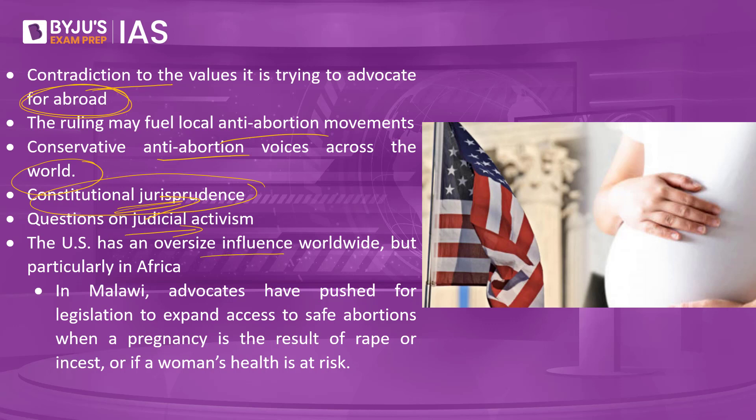The US has an oversized influence worldwide, particularly in Africa. As the saying goes, if the United States sneezes, the whole world catches a cold. In Malawi, advocates have pushed for legislation to expand access to safe abortions in cases of rape, incest, or risk to the woman's health. But since the US Supreme Court has overruled Roe v. Wade, efforts to pass such legislation in other countries could be stalled. Other countries may look to this decision and enact similar restrictive laws of their own.